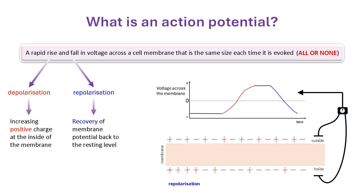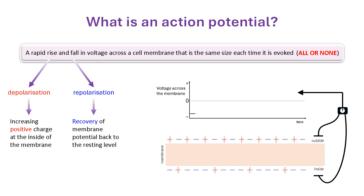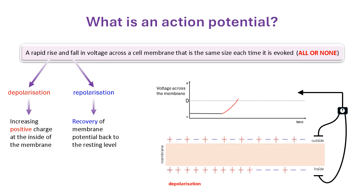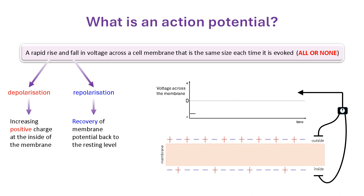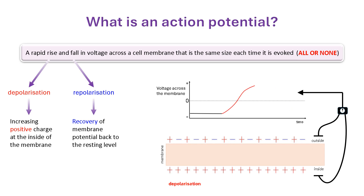During depolarisation, the inner surface of the membrane becomes more positively charged, reducing the difference across the membrane to zero. As charging continues, the voltage difference overshoots zero, so that the inside of the membrane becomes more positive than the outside. During repolarisation, the charge difference across the membrane returns to the starting level. This is essentially what happens in the membrane of a real cell during an action potential.